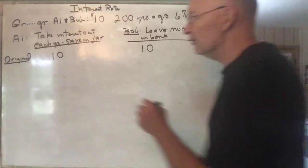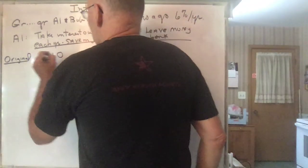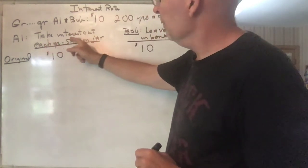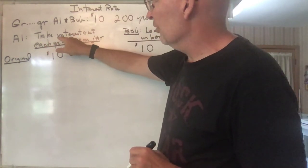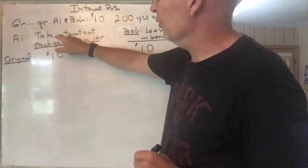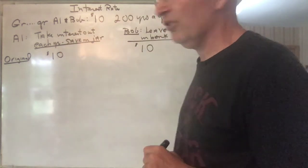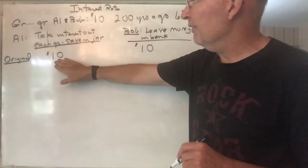So 200 years ago they both start out with $10, but they have two different strategies. Great-grandfather Al, he was a little bit cautious, so every year he would come and get the interest and take the interest out of the bank and leave the principal $10 in the bank.